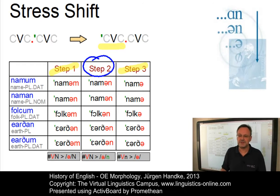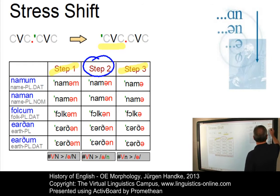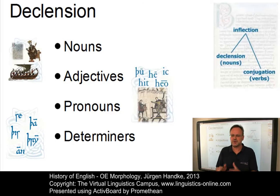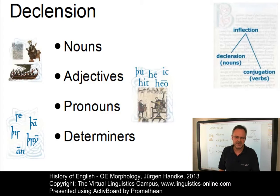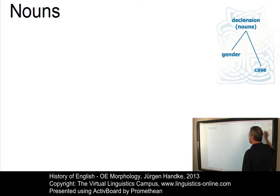So these and many other changes had already been underway within the Old English period. Let us now look at some selected aspects of Old English declension. Compared to present-day English, Old English had a complex system of declensions. This system can be subdivided into noun declension, adjectival declension, the declension of determiners, and the declension of pronouns. Let us start with nouns.